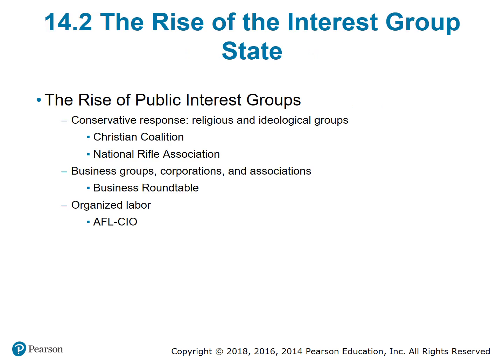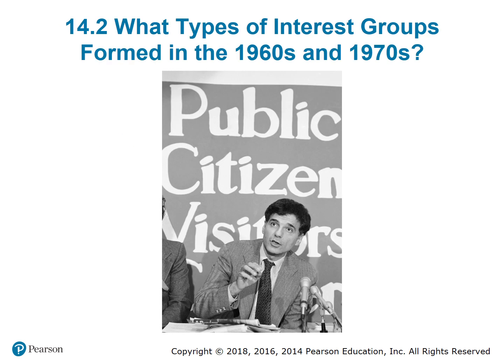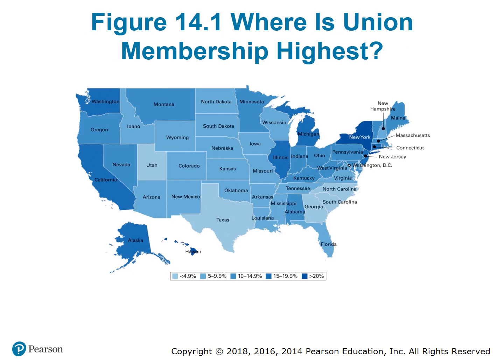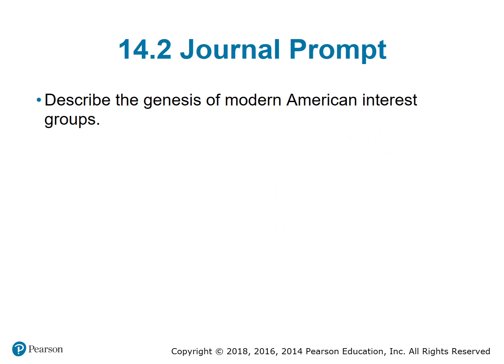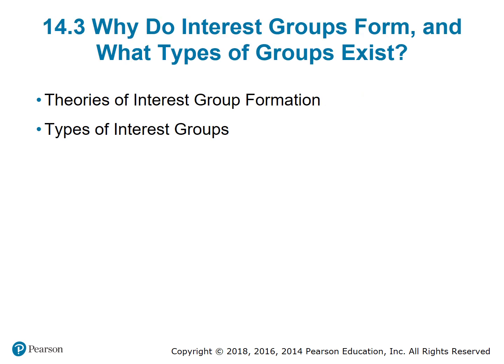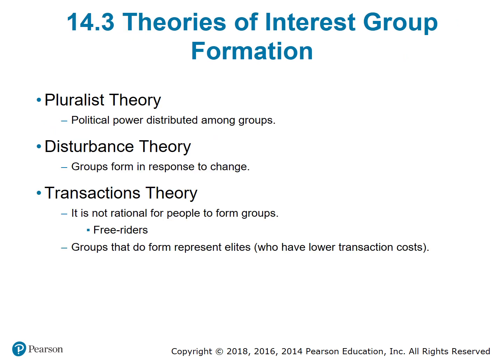We want to go back to Federalist 10, right, and James Madison talking about factions. Interest groups obviously play a large role in our political system and are the personification — even though they're not people — of factions. There are so many of them; however, are there some that are more powerful than others that may wield undue influence? We'll see.